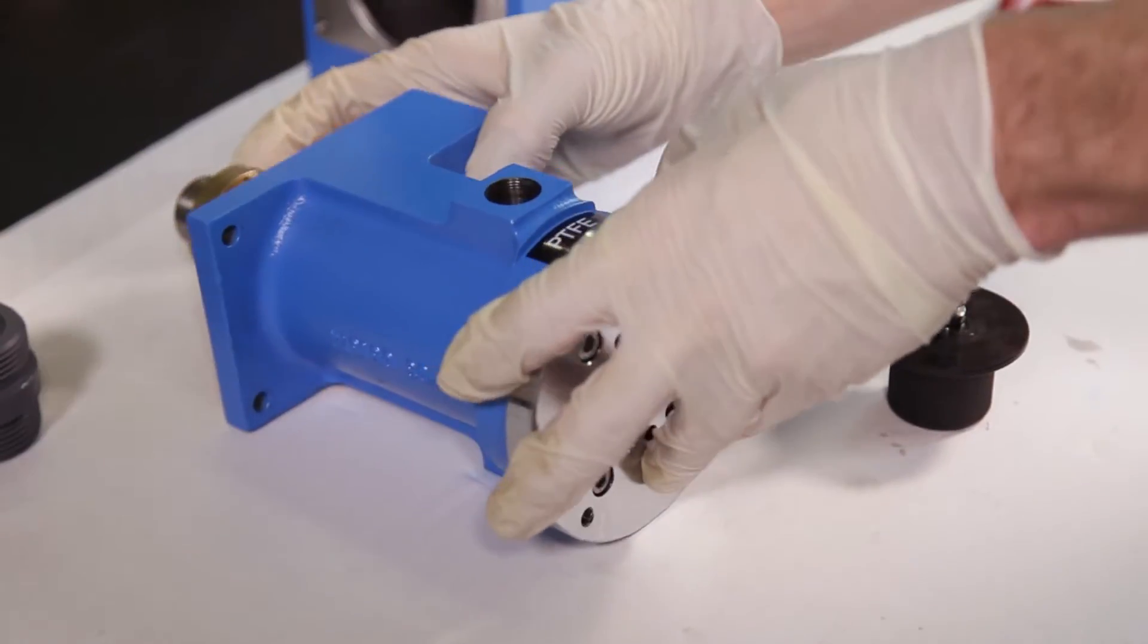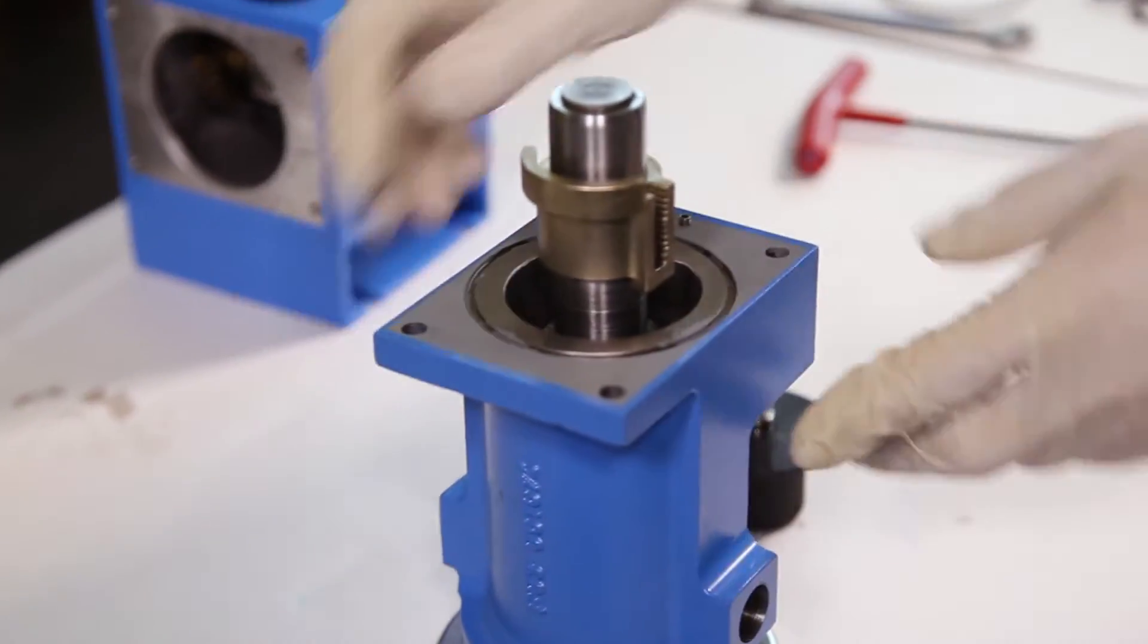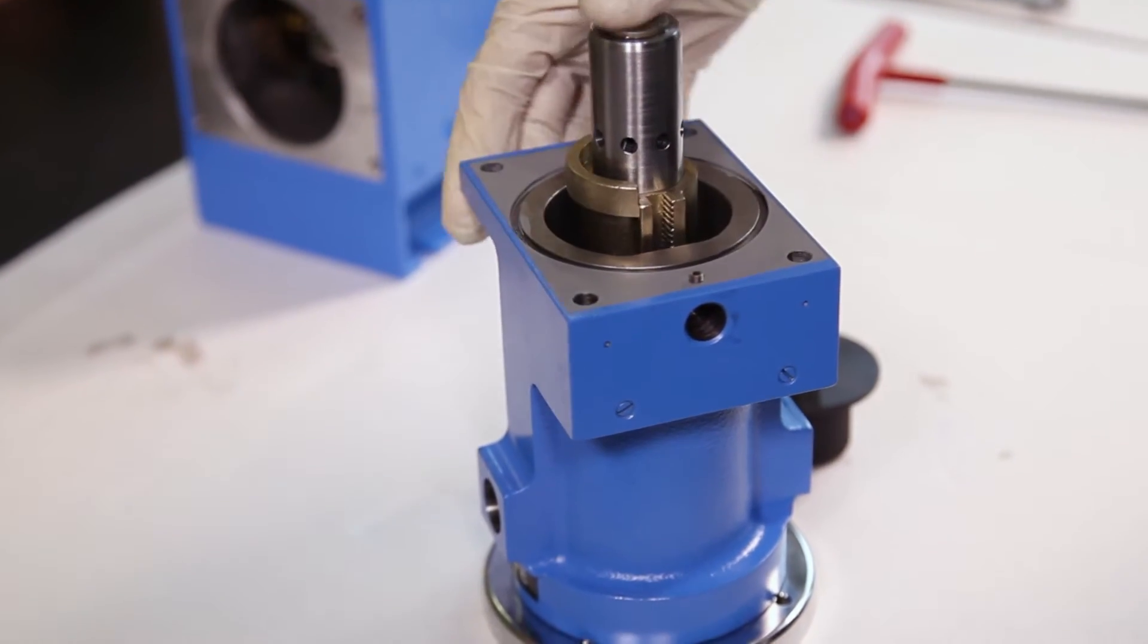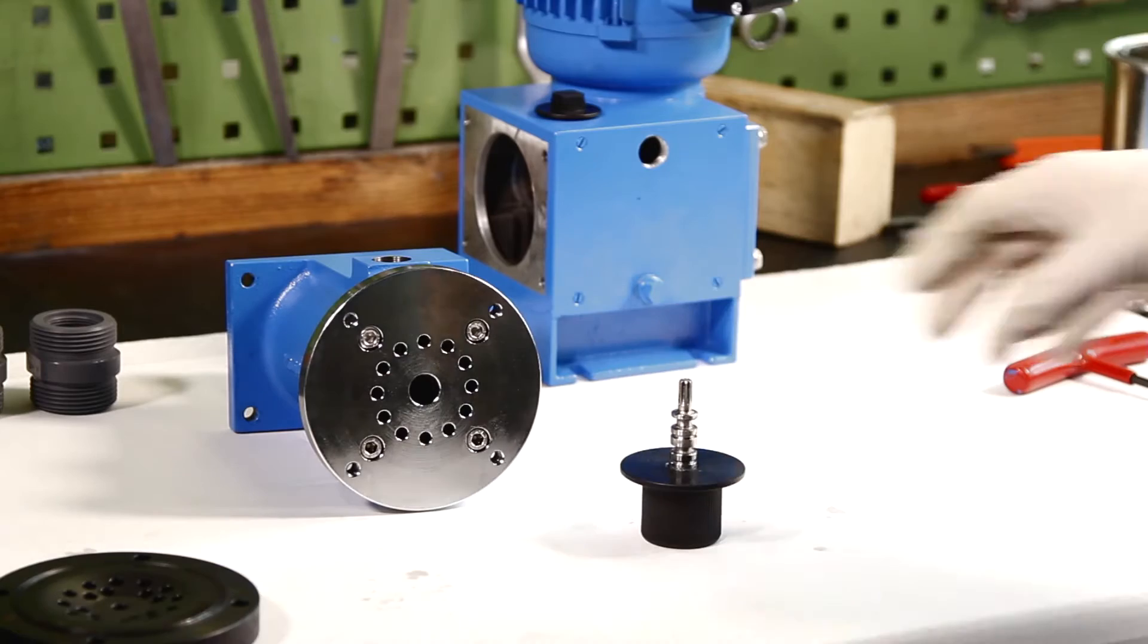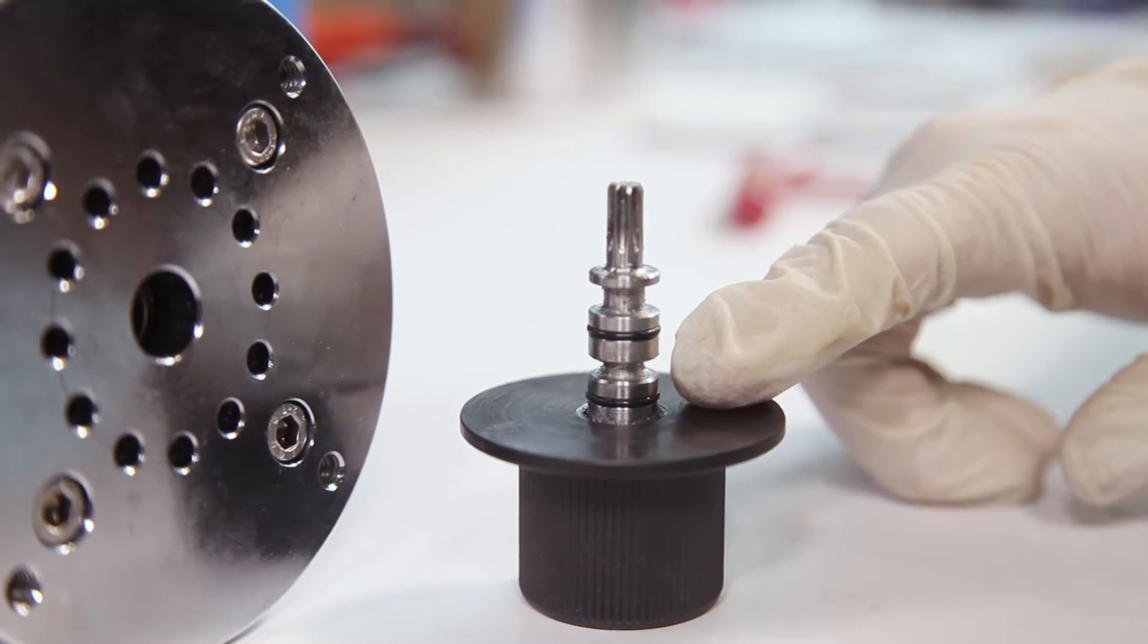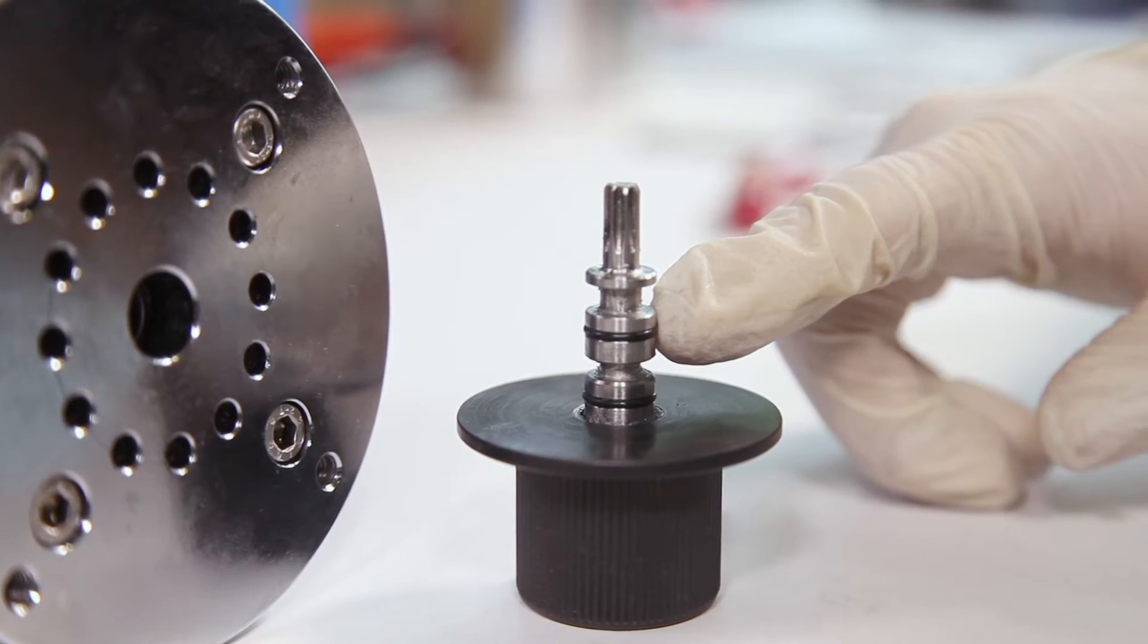When inserting the adjusting spindle, make sure that the piston and distributing regulator are positioned as shown in the sectional drawing. With lightly greased O-rings, the adjusting spindle can be inserted with a twisting motion.